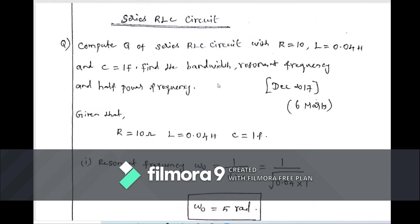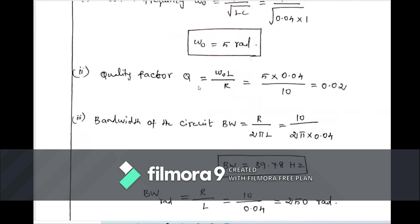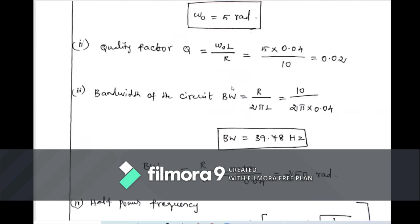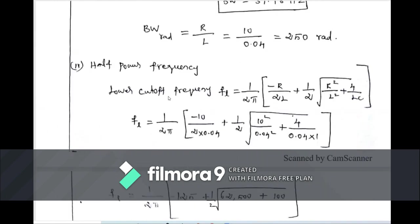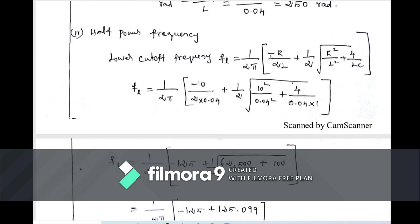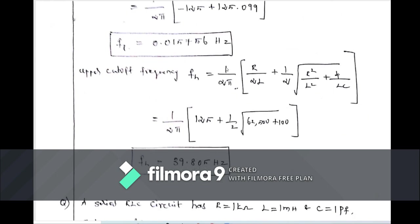Summary of formulas: resonant frequency ω₀ = 1/√(LC); quality factor Q = ω₀L/R; bandwidth in hertz = R/(2πL), in radians = R/L; lower cutoff frequency f_L = (1/2π)[−R/(2L) + (1/2)√(R²/L² + 4/LC)]; upper cutoff frequency uses the same formula with plus instead of minus.